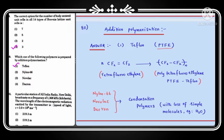Teflon's chemical name is polytetrafluoroethylene (PTFE), prepared by polymerization of tetrafluoroethylene (CF₂=CF₂), where hydrogens are replaced by fluorine. N monomers of tetrafluoroethylene polymerize to give PTFE, commercially called Teflon. The other options — Nylon-66, Novolac, and Dacron — are formed by condensation polymerization, where simple molecules such as water are eliminated during formation.